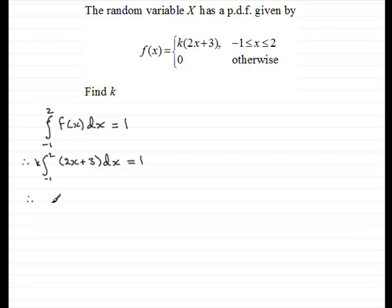So if we integrate this in the usual way, we would have the integral of 2x would be x squared and the integral of the constant 3 would be 3x. And then that is between the limits minus 1 and 2 and it equals 1.